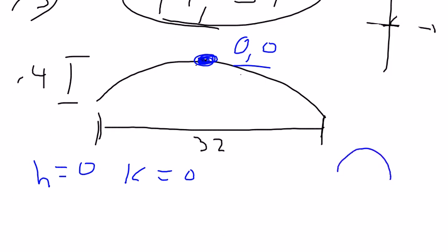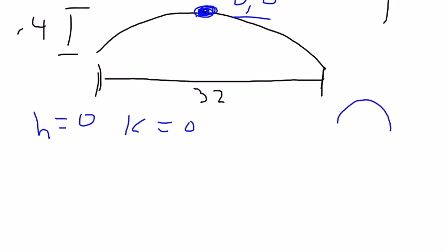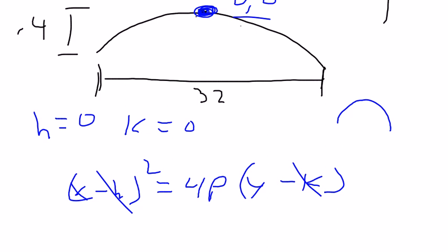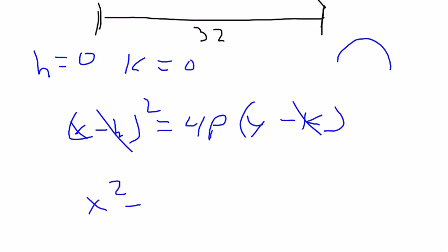It's going down, so I already know that I have x minus h squared equals 4p y minus k. Okay, well we know h, we know k. So already we're down to this: x squared equals 4 times p y.